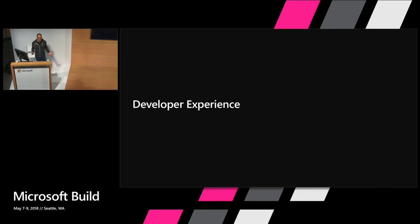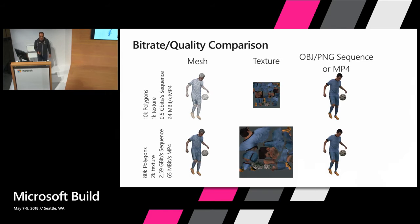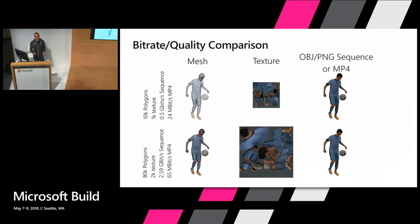So what is a hologram deliverable? What does that file actually look like? The deliverable can be one of two packages. First, we can deliver a sequence of OBJ and PNG files that you are free to flip through in your application however you want. However, in order to leverage some of our special magic in our processing, we also compress down to an MPEG-4 file with embedded mesh data. That's a proprietary format, but we also deliver scripts and plug-ins for your favorite development environment so that you can consume these things super easily.